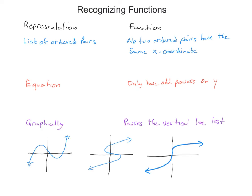For a list of ordered pairs, check that no two ordered pairs have the same x-coordinate. Because in a function, each element of the domain has one element of the range — if two different points share the same x-coordinate with different y-coordinates, you have a domain element with two range elements, so it's not a function. When you see a listing of ordered pairs, just determine if any have the same x-coordinate. If they do, it's not a function.